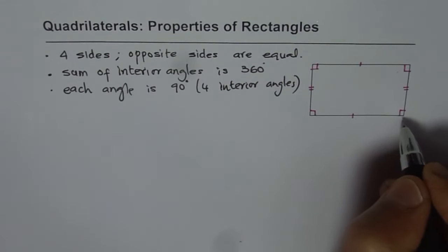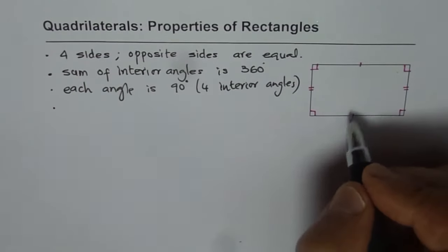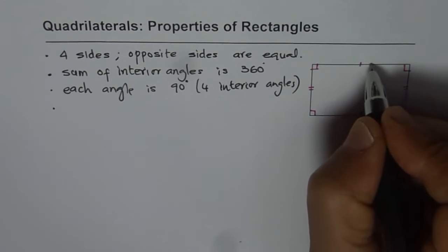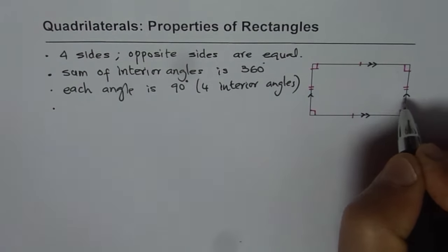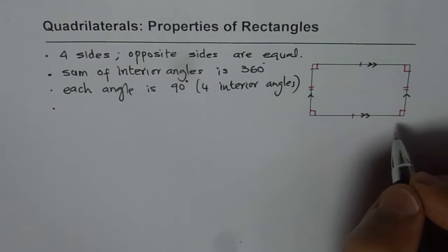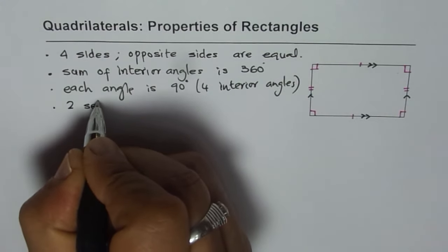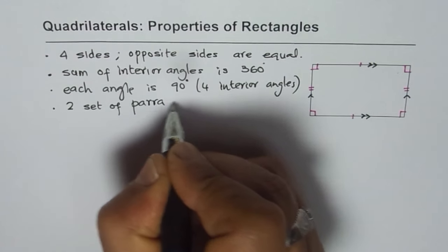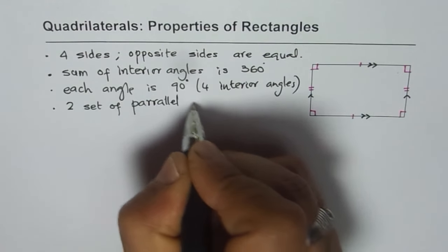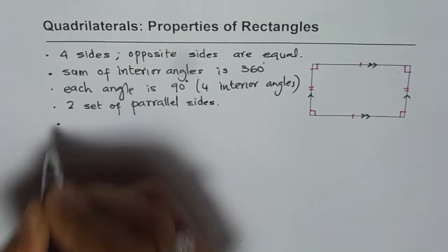Now what do you notice about the opposite sides? You will see that they are parallel. The opposite sides are parallel. We denote these with arrows, similar arrows for parallel sides. So we can say two sets of parallel sides.